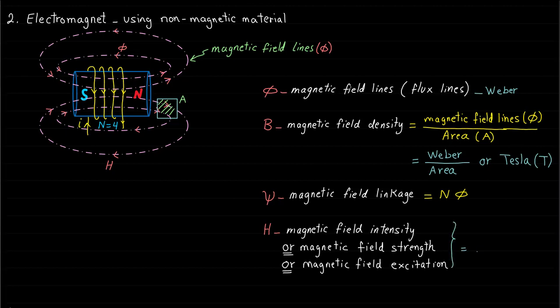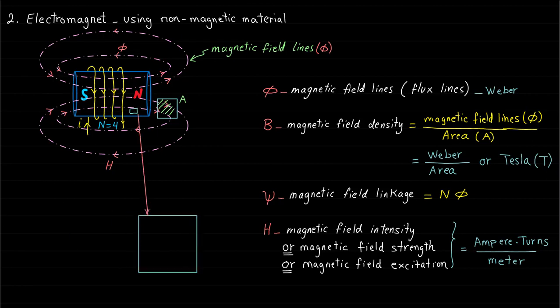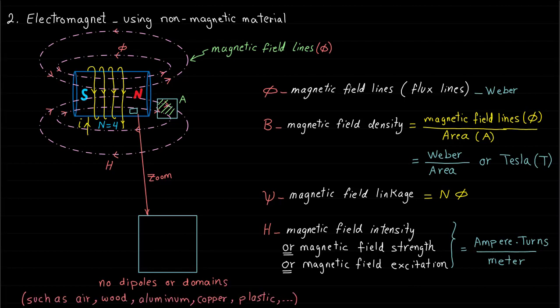We will learn more about this magnetic field in the next lecture. Basically, the above-mentioned four variables relate to each other and are mathematically different; however, all of them represent the magnetic field. Now, if we take a small part of this non-magnetic material and zoom in, we can find that these materials have no dipoles or domains. Therefore, this type of material has no contribution to the magnetic field produced by the exciting current and the coil.